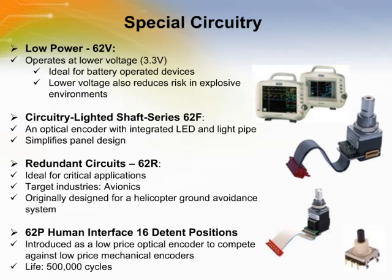The 62B encoder operates at a lower voltage of 3.3 volts, compared to the standard encoders that operate at 5 volts. It consumes less power, which makes it ideal for battery-powered devices. The lower voltage also reduces risk in explosive environments.